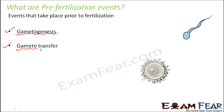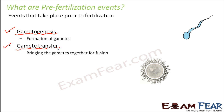Once the gametes are formed — both male and female — they need to meet each other so that fusion can take place. The transfer of gametes so that they can be brought together for fusion is called gamete transfer. If the gametes are not brought together, there is no point in their formation, because until they meet and fuse, nothing is going to happen.